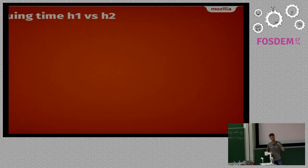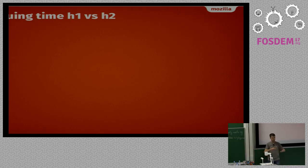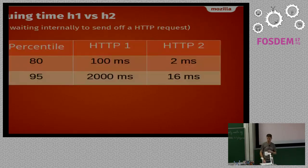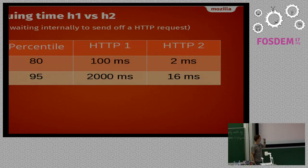Internally in Firefox's networking, we have a queue for outgoing HTTP requests waiting for a connection or availability. They can be blocked because we can't open more connections or are blocked by something else internally. We can measure how long the average time for a request sitting in that queue is. Looking at the worst cases, it's a drastic improvement - we're basically no longer waiting for outgoing requests and can send them much earlier. At the 95th percentile, that's almost a 100 times improvement.